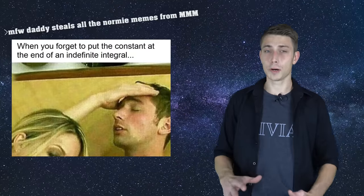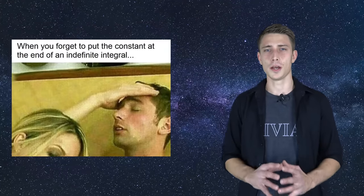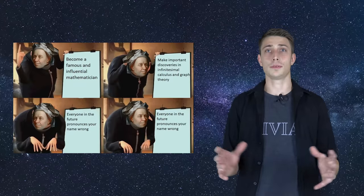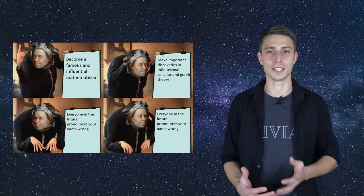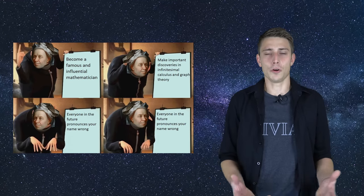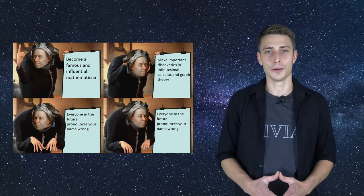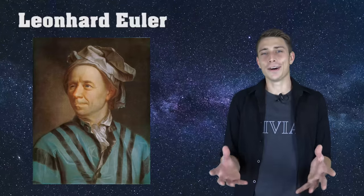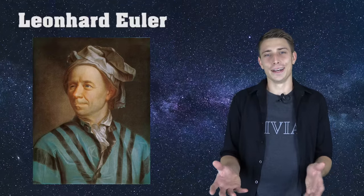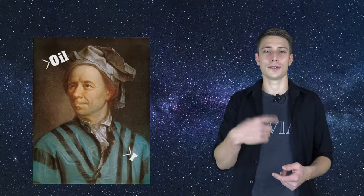So this first one is pissing me off the most because everyone is saying his name in the wrong way. He's been such a great mathematician and no one seems to know how to pronounce his name correctly. So his name is Leonhard Euler, and you just pronounce it like 'oil' with a little R behind it — so Euler.